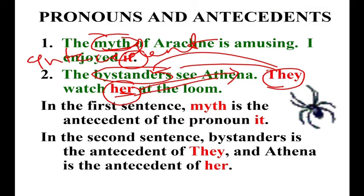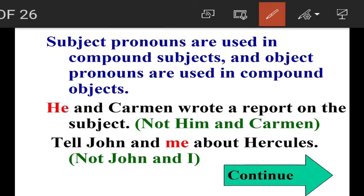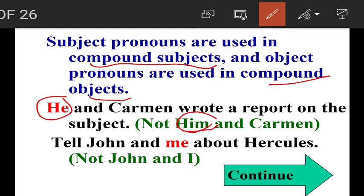Now, using pronouns correctly: subject pronouns are used in compound subjects, and object pronouns are used in compound objects. For example: 'He and Carmen wrote a report on the subject.' Here, he is used as a subject, so we cannot write him and Carmen, because him is an object pronoun.